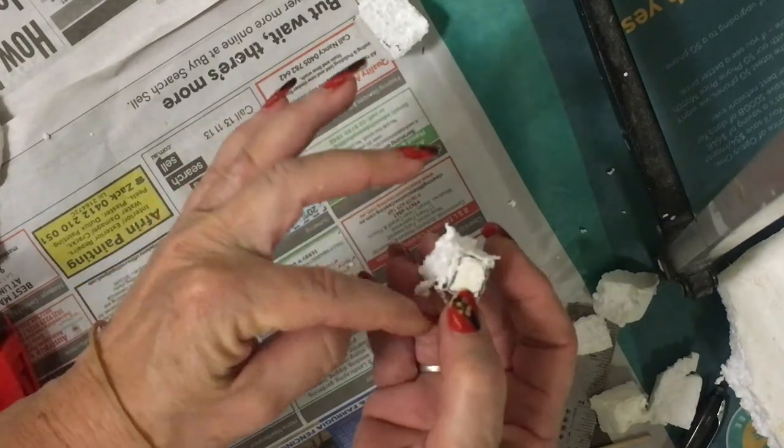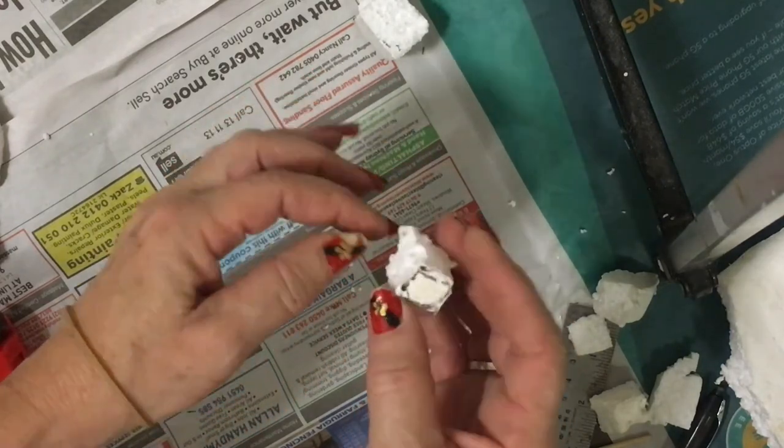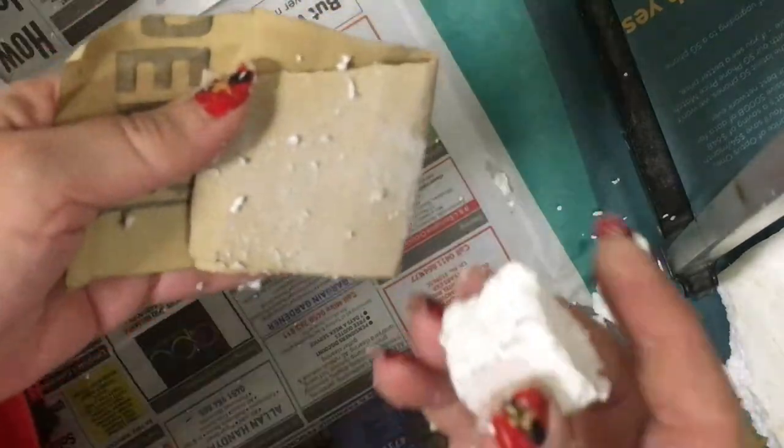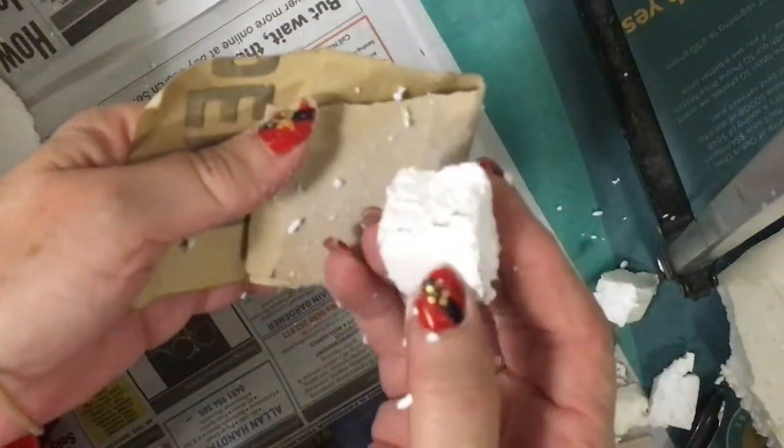And now all we're going to do is we're going to round them off so that they make them into cylindrical shapes. So I'm just using 240 grit sandpaper.